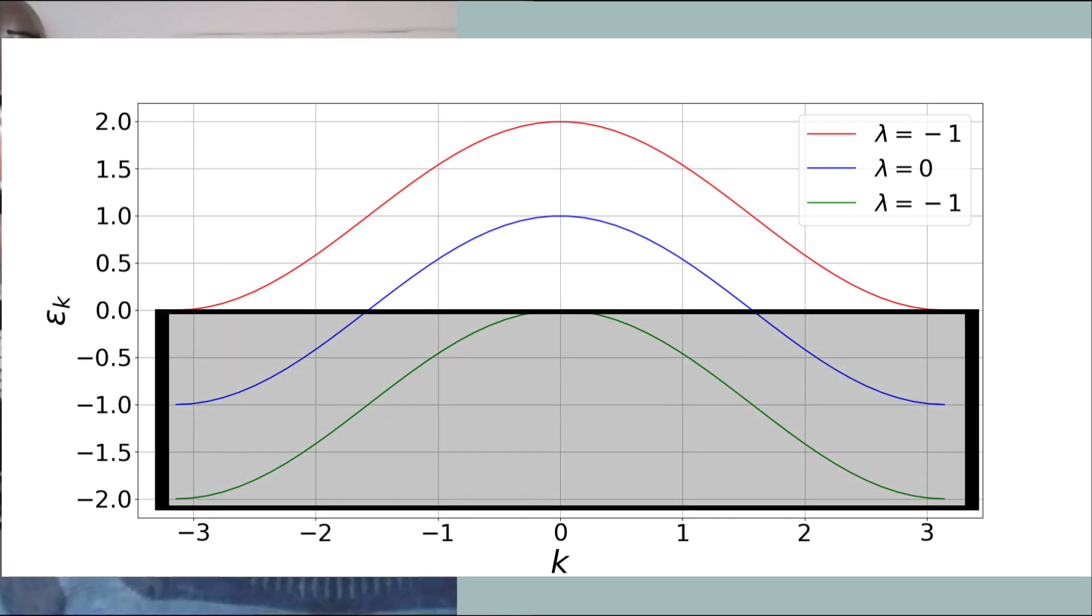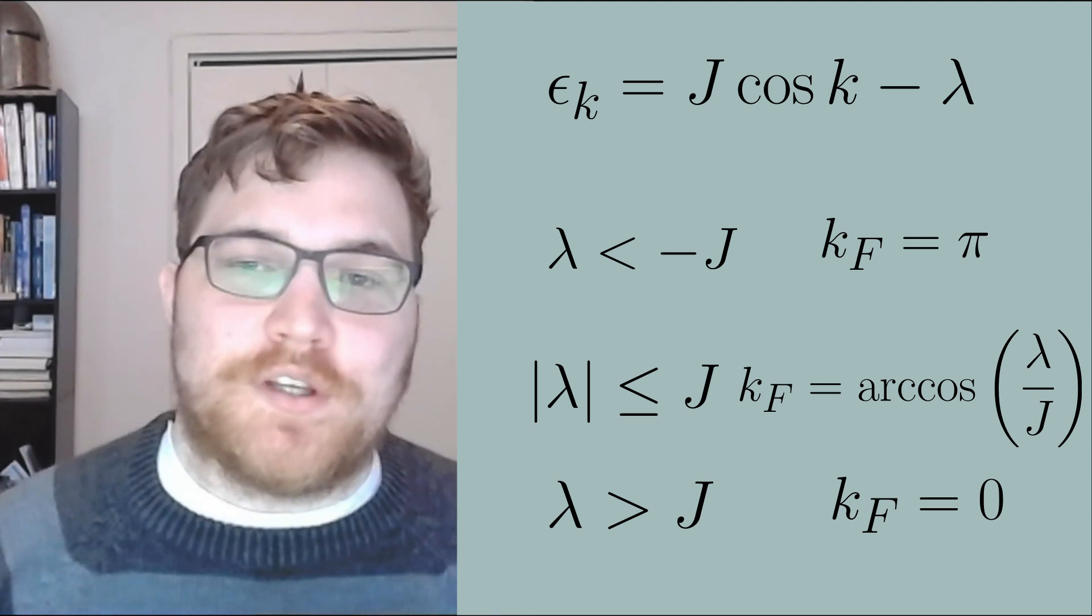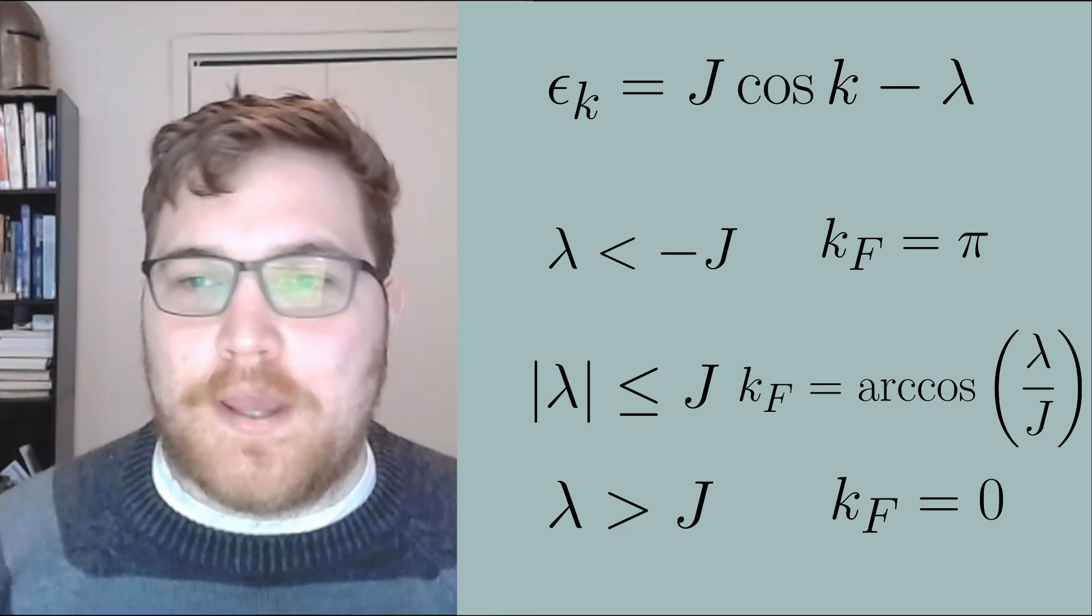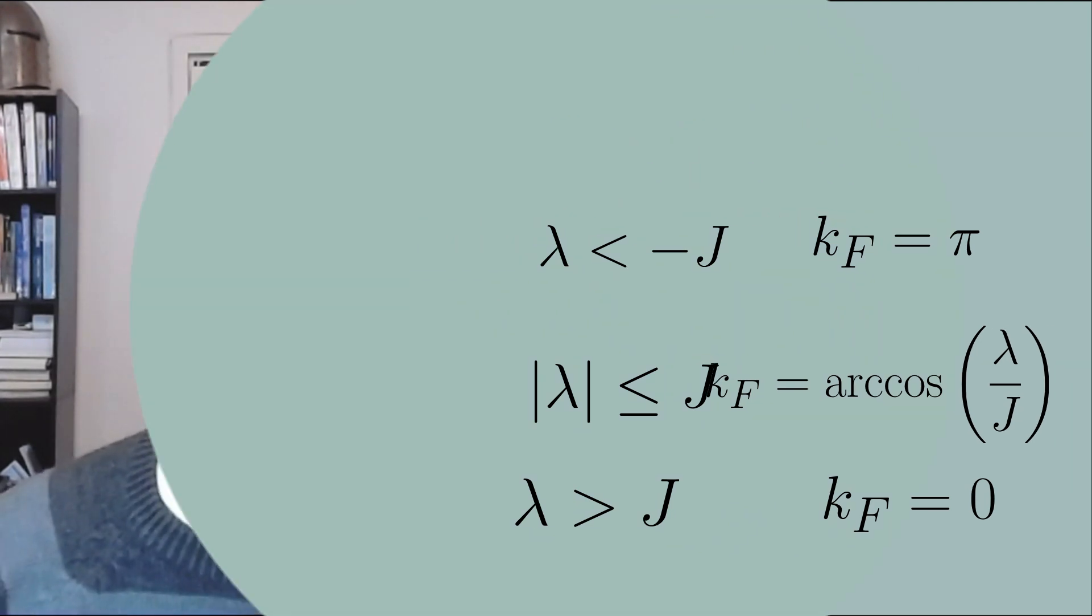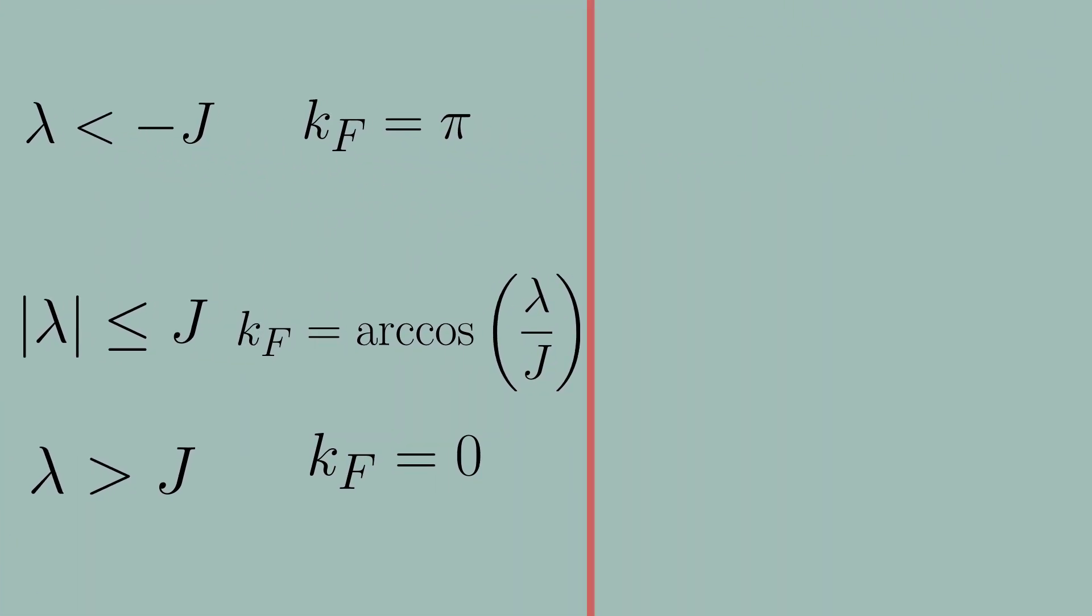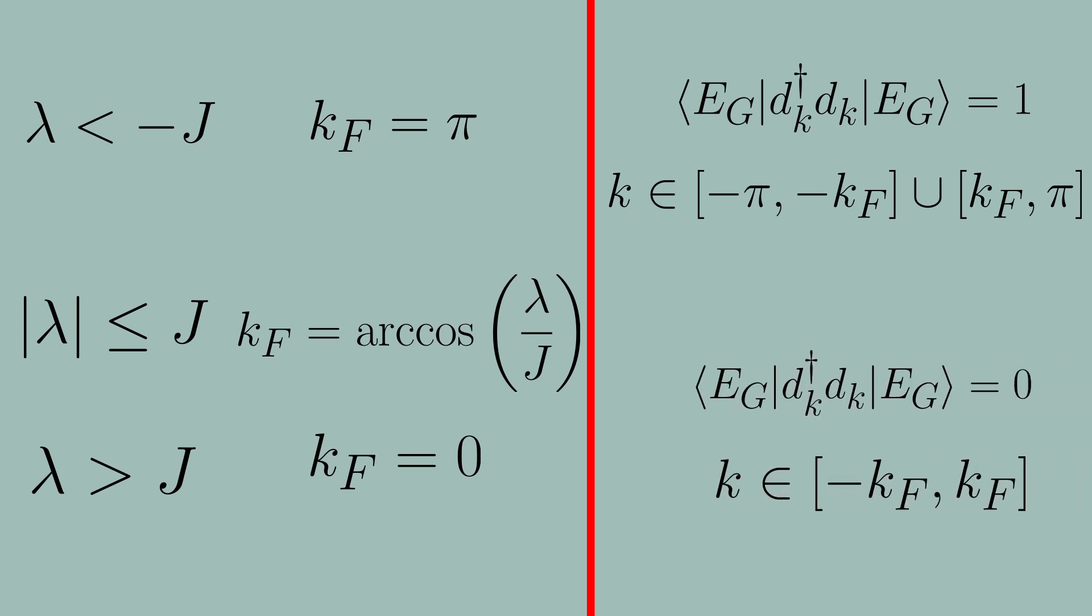The Fermi momentum is defined accordingly. Since we're dealing with a cosine curve, the Fermi momenta come in plus or minus pairs. The ground state will occupy a mode between negative pi and the negative Fermi momenta and between the Fermi momenta and pi. Everything else in between these intervals will be unoccupied and this formally defines our energy ground state.